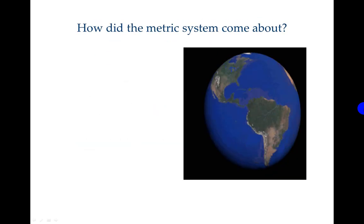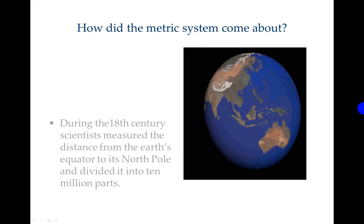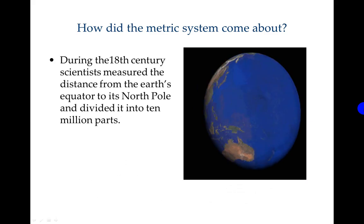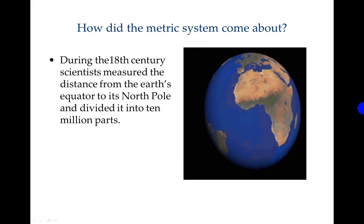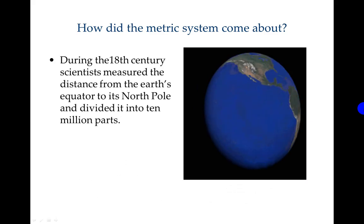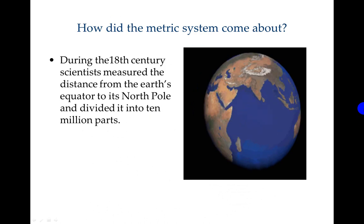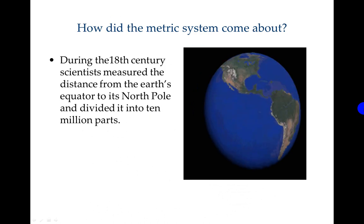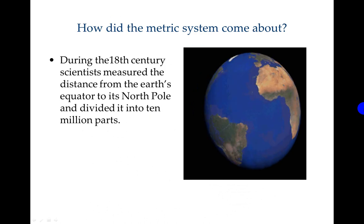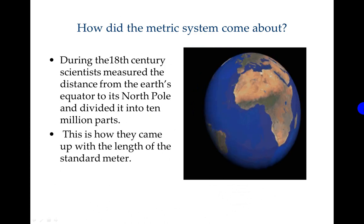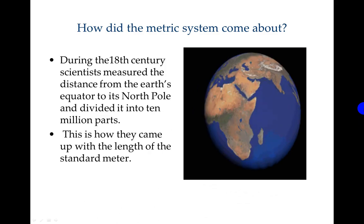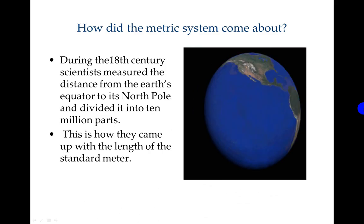How did the metric system come about? During the 18th century, scientists measured the distance from the Earth's equator to its north pole and divided it into 10 million parts. This is how they came up with the length of the standard meter.